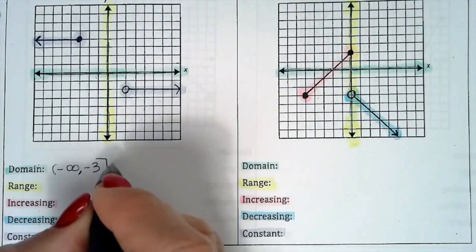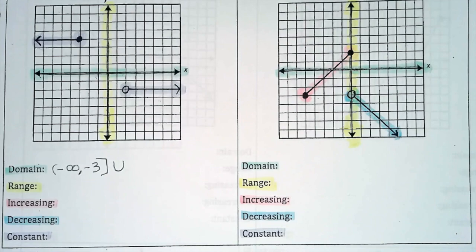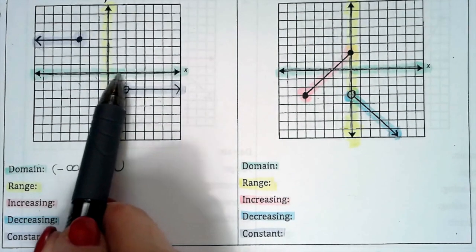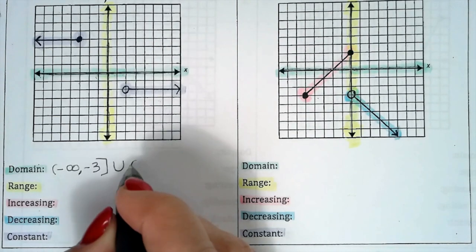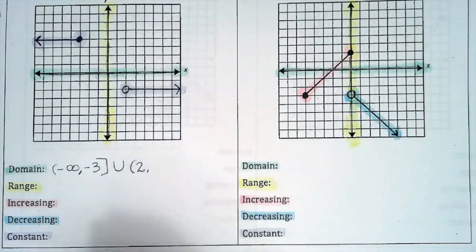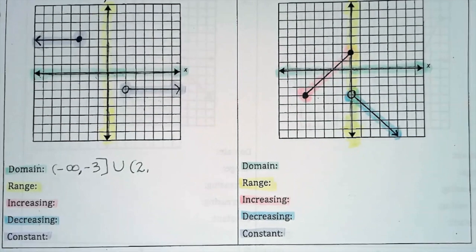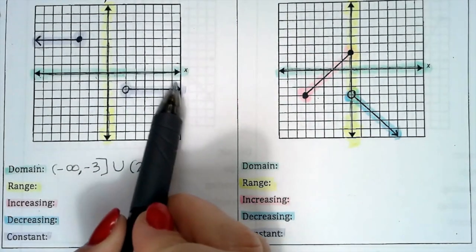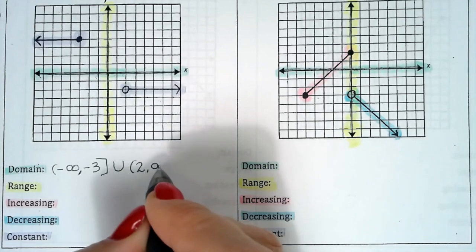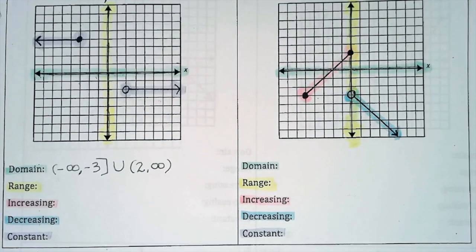When there's a gap, we acknowledge that with the U for union. And now we're going to pick up at the x value of 2. There's the origin, so 1, 2. That x value is where we begin, but I'm using a parenthesis because 2 is not included in the domain. It's an open circle. And this line continues until forever, so we write infinity. So there's our domain.